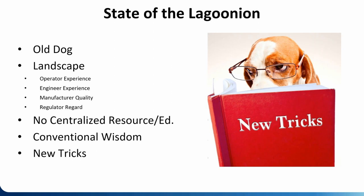Regulator regard really depends on the state. Some states absolutely love lagoons — they recognize that small towns of 400 people don't have millions of dollars to build a fancy SBR. In other states, regulators say the copy-pasted activated sludge plant did the job for this town, so you need to do the same — it's the easy button, but at greater cost for the towns. There's also no centralized resource for lagoon education. Rural water associations are fantastic, but there's no one centralized resource, which is one of the reasons we're starting this master class — to pull wisdom from all over the country and give it back to people all at once.